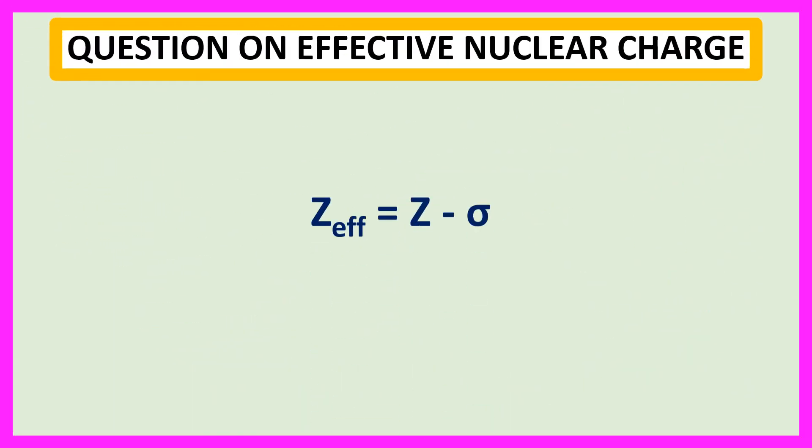We know Z effective is equal to Z minus sigma, where Z is the atomic number and sigma is the shielding or screening constant.